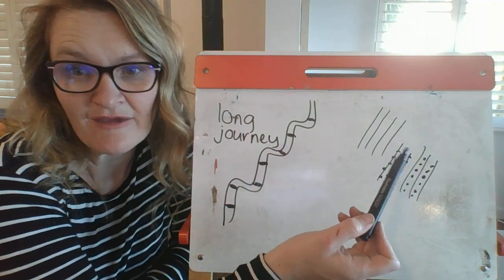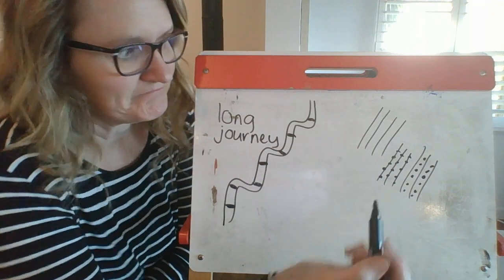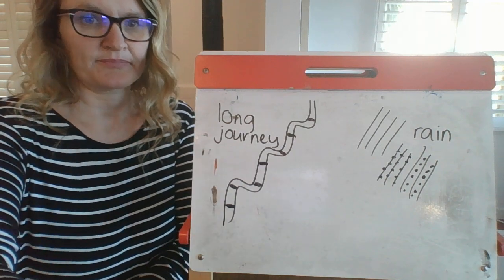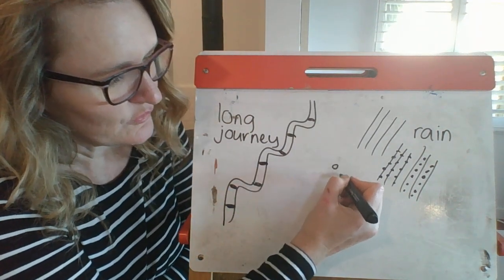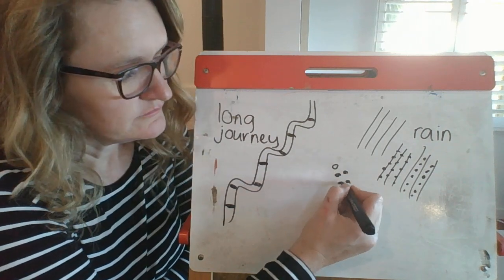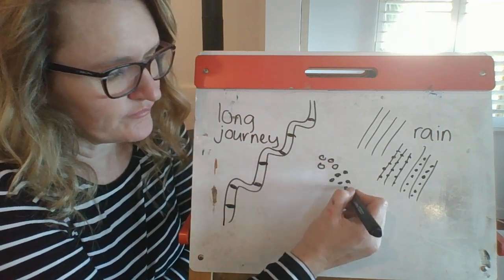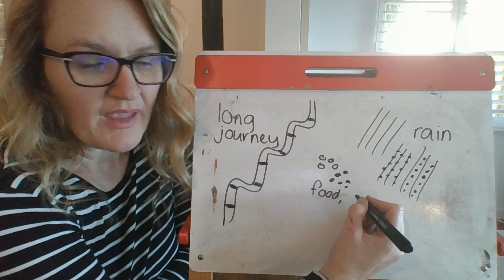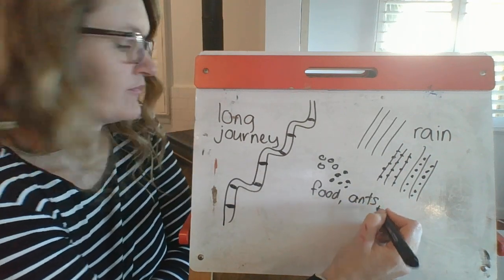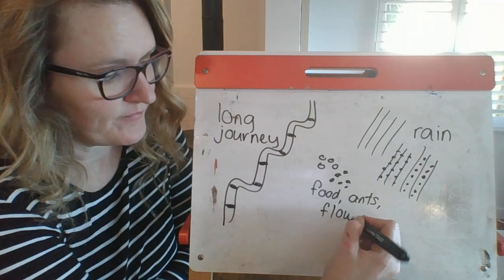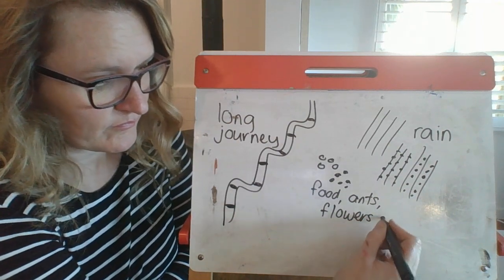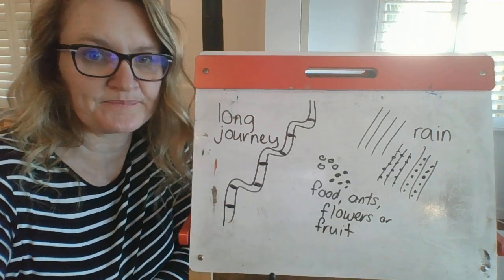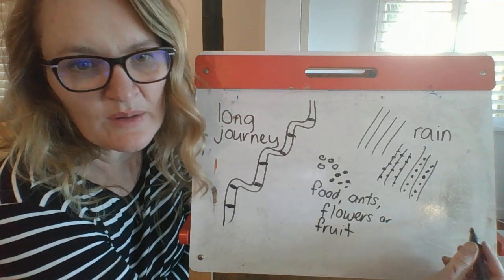Dots or circles represent all different sorts of things, like food, ants, flowers, or even fruit. And the last one I'm going to do is possum.